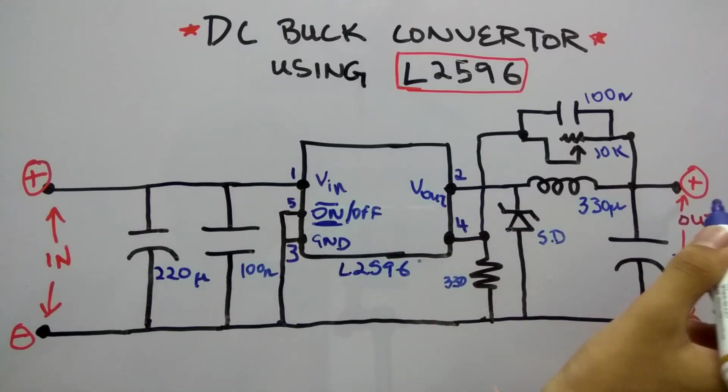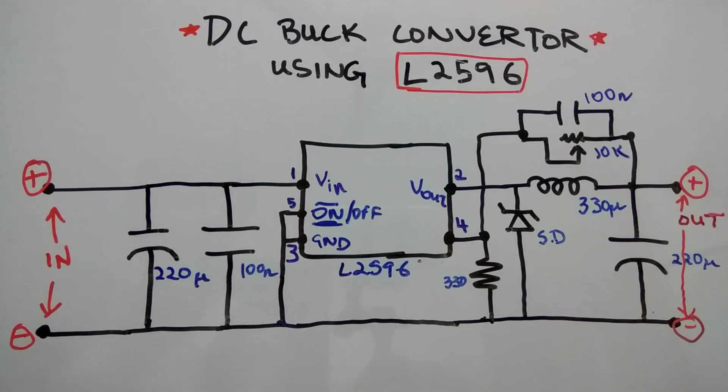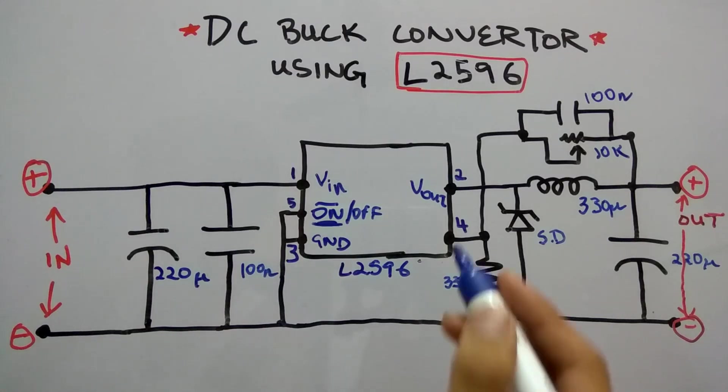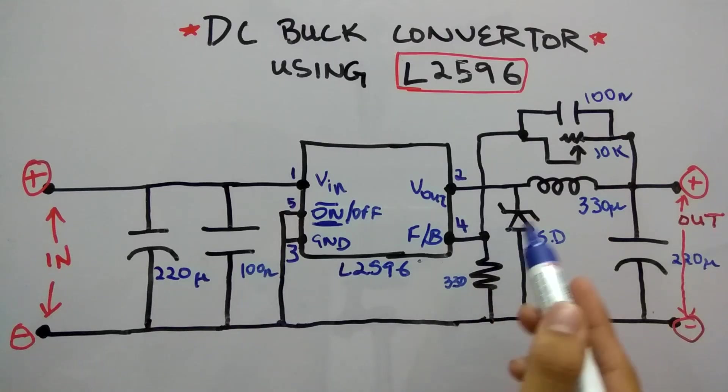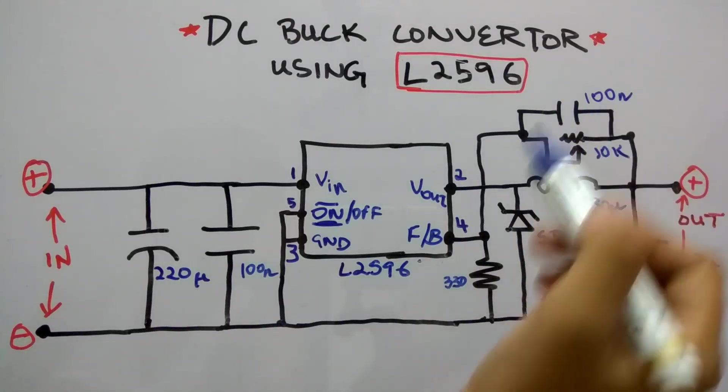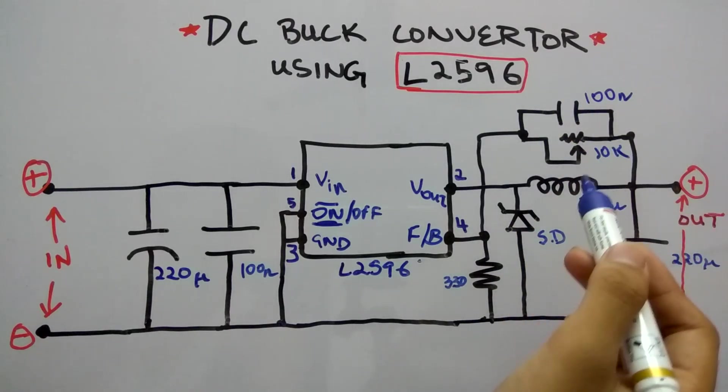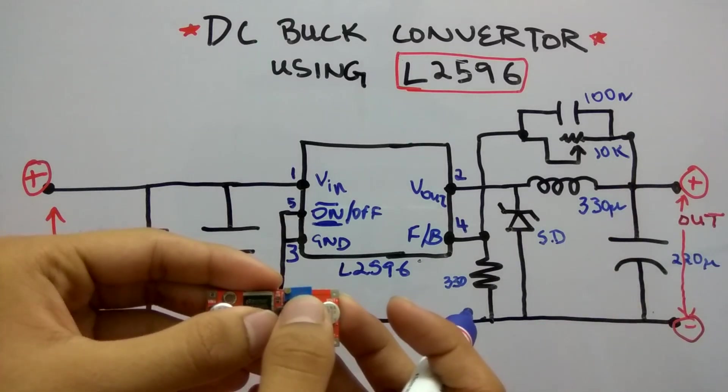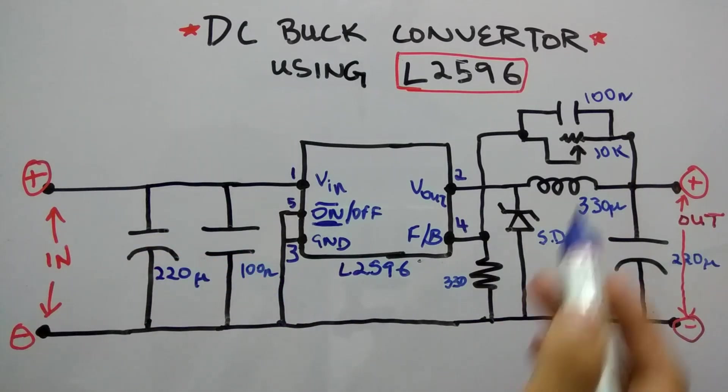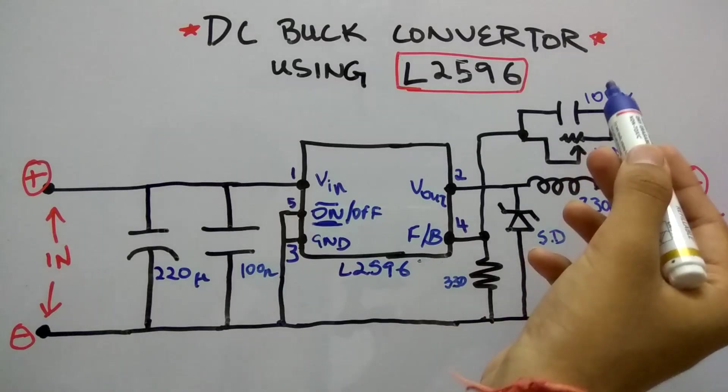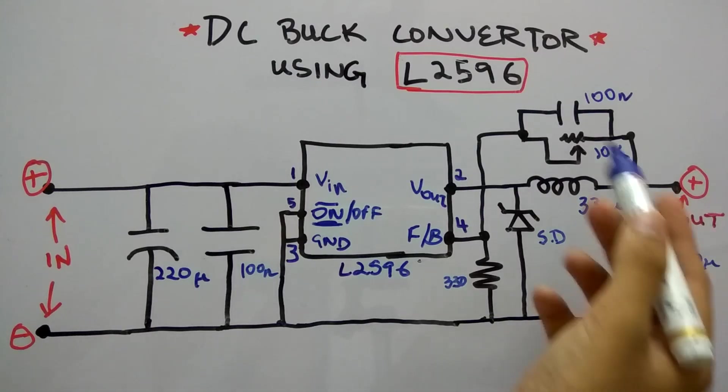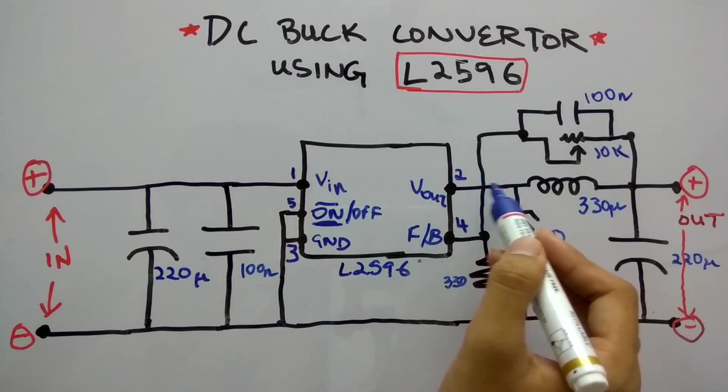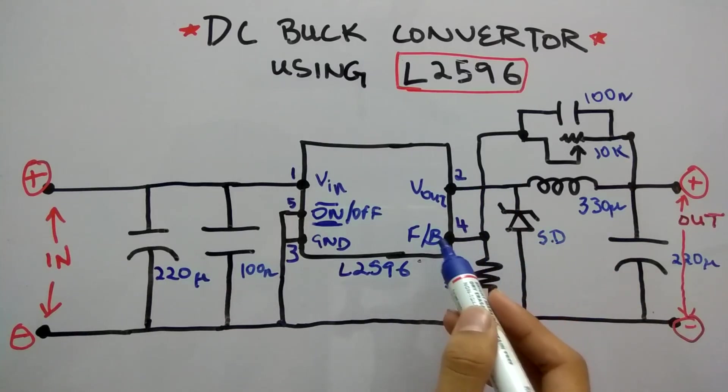Firstly, the second terminal we saw was V_out, so that is going directly to the output terminal using an inductor. And the fourth pin we saw was a feedback. The feedback pin is connected to this capacitor-RC circuit - that is the variable 10 kiloohm multi-turn potentiometer and a 100 nanofarad ceramic type capacitor.